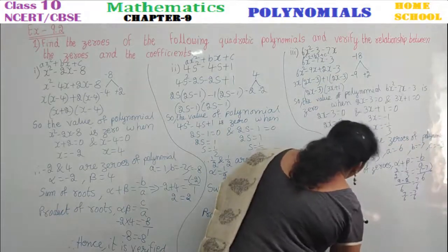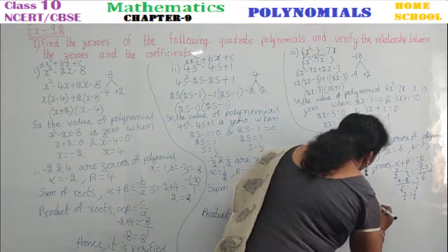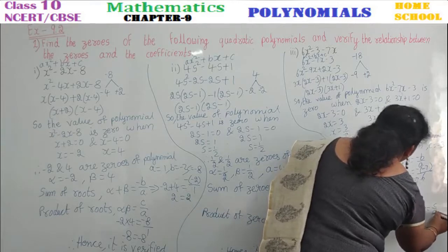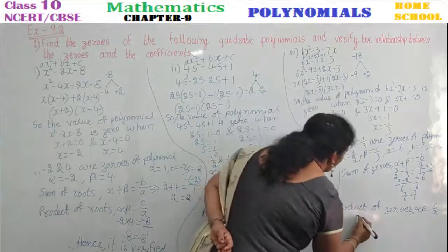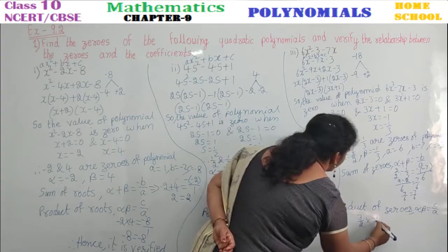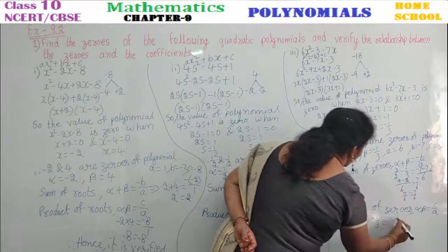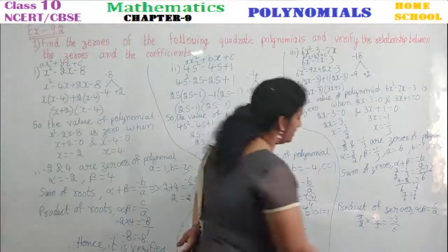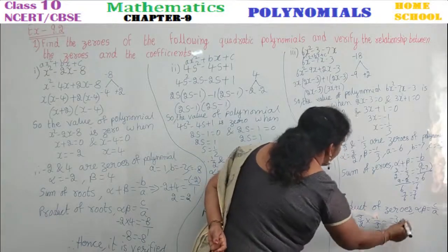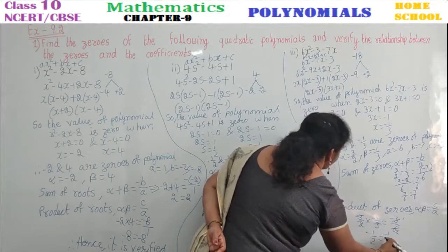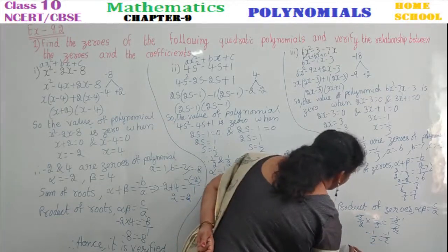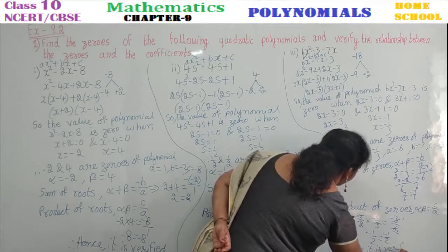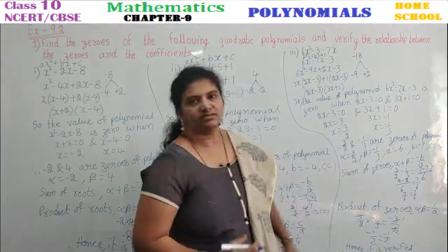Hence it is verified. See the fourth problem: 4u² + 8u. For this type of polynomial, just take the common factor and find the zeros. What is common in the two terms? 4u is common. Taking 4u out: 4u(u + 2). So the value of 4u² + 8u = 0 when 4u = 0 (giving u = 0) and u + 2 = 0 (giving u = -2). Therefore, 0 and -2 are zeros of the given polynomial.